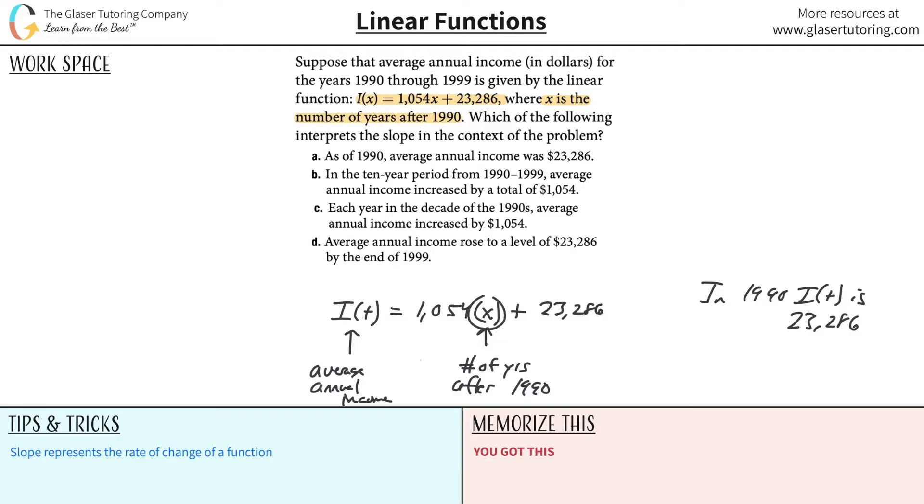Then if it's one year after 1990, meaning it's 1991, that means the average annual income will now be the result of 1990 plus about a thousand bucks. If it's two years after 1990, if it's 1992, it will be 23,286 plus two times this change, this amount of change.